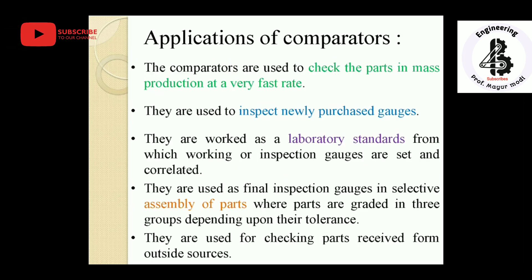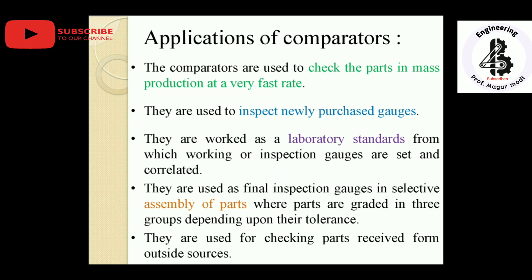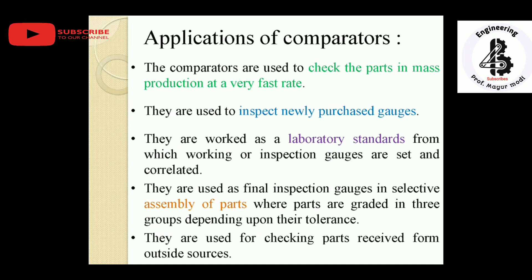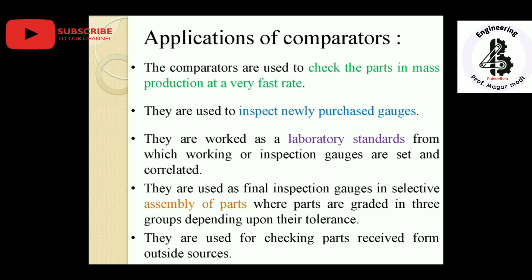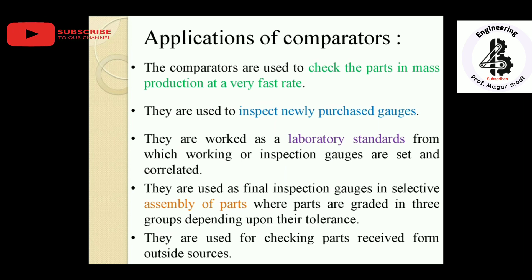Applications of comparators: they are used to check parts in mass production at a very fast rate, increasing productivity. They are used to inspect newly purchased gauges, and they work as laboratory standards from which working or inspection gauges are set and corrected. They are used as final inspection gauges in the selective assembly of parts, where parts are graded into groups depending on their tolerance — accepted or rejected accordingly.